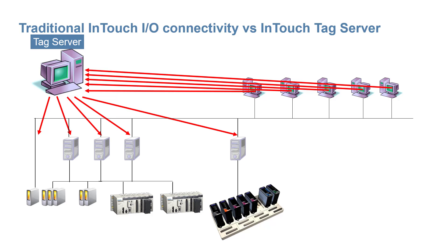If the value hasn't changed from each subsequent client request, that same latest value is served from the cache. All of this results in a tremendous reduction in bandwidth and network load.